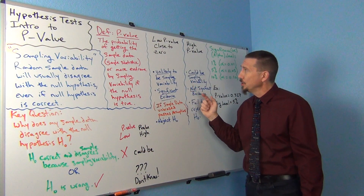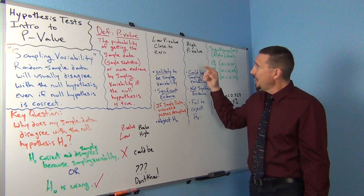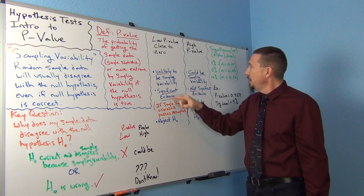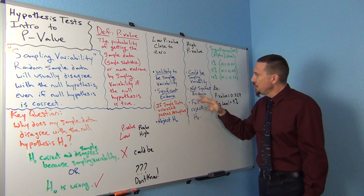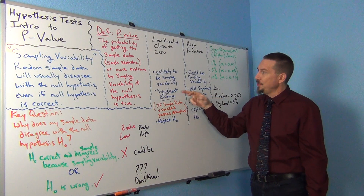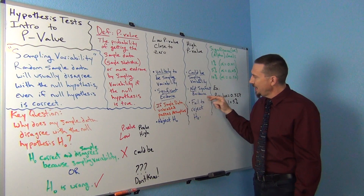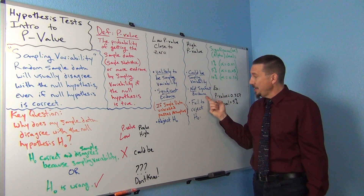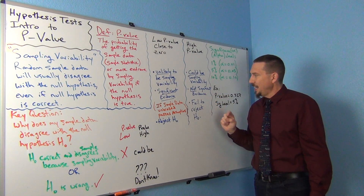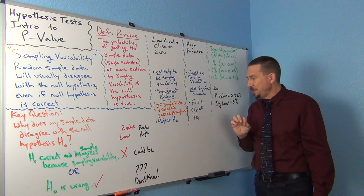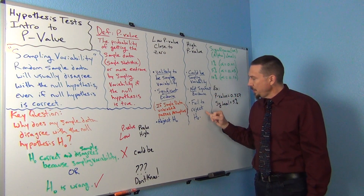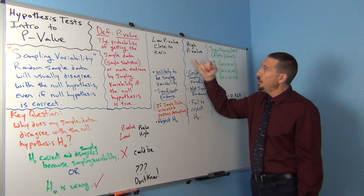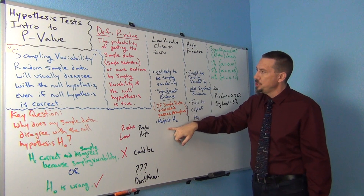Being found not guilty in a court of law is not synonymous with being innocent. It means that you didn't have enough evidence to convict them. That's kind of how this p-value works. A low p-value is considered significant evidence, and a high p-value means you don't have enough evidence to reject the null. So you either have evidence to reject the null, or you do not. That doesn't mean the null is correct if you don't have evidence to reject it. When you have a high p-value, you fail to reject the null. Low p-value close to zero — reject the null.